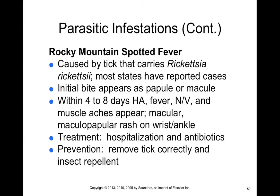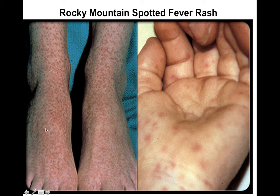This is showing what Rocky Mountain spotted fever looks like — a maculopapular rash that typically occurs in the distal extremities, especially the ankles, wrists, hands, and feet.